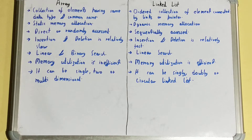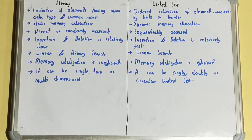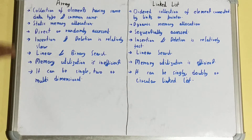In an array, elements can be accessed directly or randomly using the index number. Whereas in a linked list, elements are accessed sequentially — you have to traverse link by link to reach the desired element.